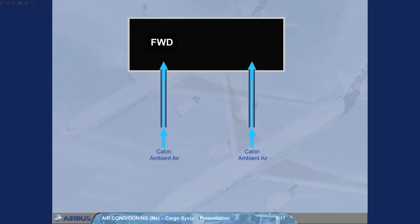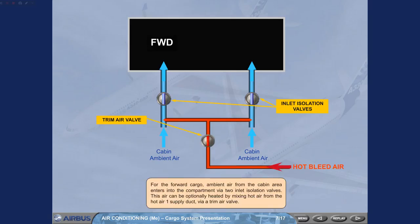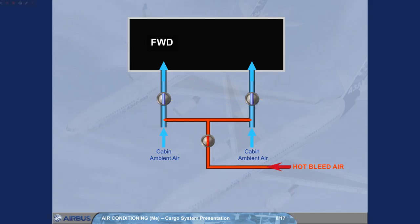For the forward cargo, ambient air from the cabin area enters the compartment via two inlet isolation valves. This air can be optionally heated by mixing hot air from the hot air one supply duct via a trim air valve. Also, this air can be optionally mixed with cold air from PAC-2 via a cold air valve. If the cooling is operated below 20,000 feet, the PAC-2 outlet temperature is limited to 5 degrees Celsius to avoid ice accretion on the cold air valve.